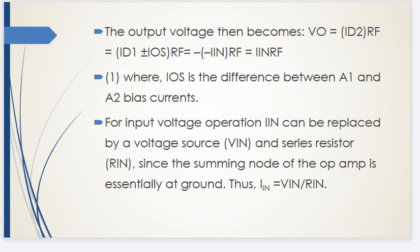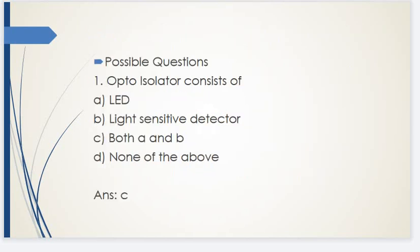For input voltage operation, the input current can be replaced by a voltage source V-input and a series resistor R-input. Since the summing node of the op-amp is essentially at ground, input current equals input voltage divided by input resistance. In summary, an optoisolator consists of both an LED and a light-sensitive detector. Thank you.